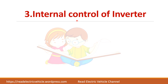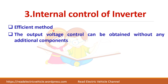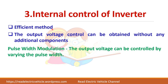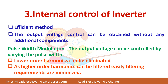Next is the internal control of the inverter, where no external devices are needed — so this method is said to be the efficient method. This is achieved by pulse width modulation, where you control the output voltage by varying the pulse width. By this technique we can reduce lower-order harmonics easily, and higher-order harmonics can be easily filtered out because when the frequency order is high, the filter size gets reduced.